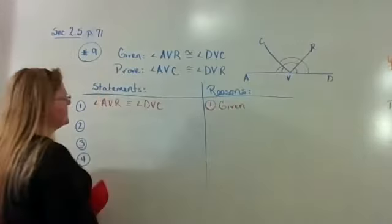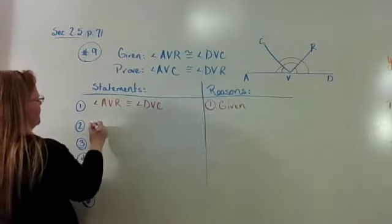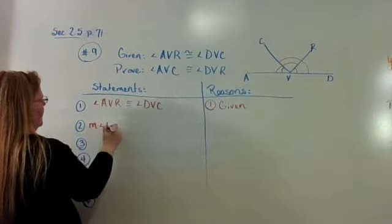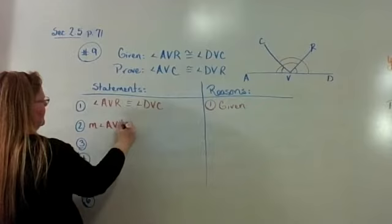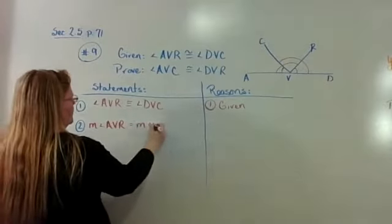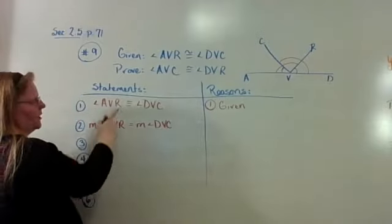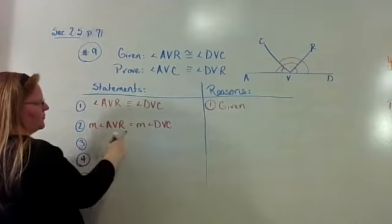Then I hope you spent some time looking at it, and you said that the measure of angle AVR is equal to, not congruent, the measure of angle DVC. We know that because they're numbers, they have to be equal. Angles are congruent, numbers are equal.